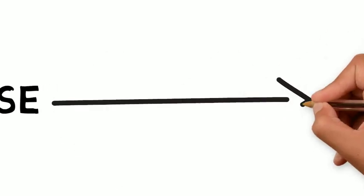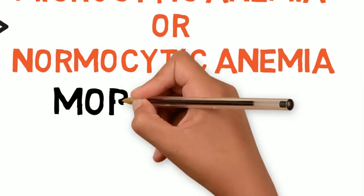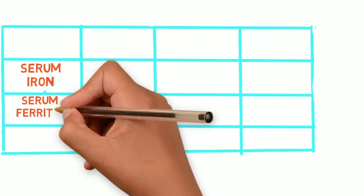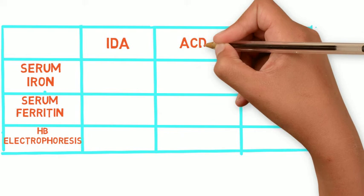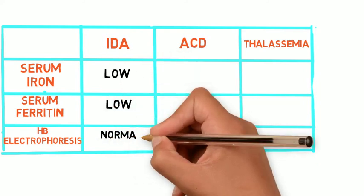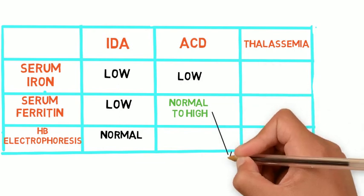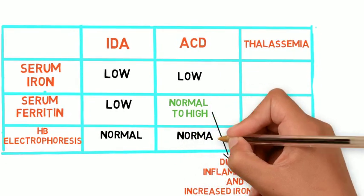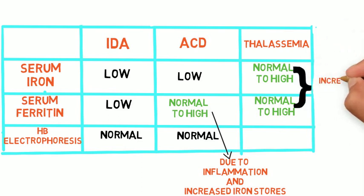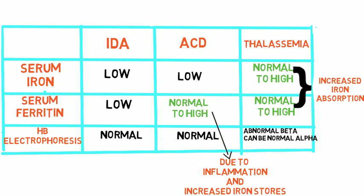Anemia of chronic disease more commonly causes normocytic anemia due to decreased erythropoiesis. To differentiate common microcytic anemias — iron deficiency anemia, anemia of chronic disease, and thalassemia: in iron deficiency anemia, both serum iron and ferritin are low, and electrophoresis is normal. In anemia of chronic disease, serum iron is low but ferritin is normal to high due to inflammation and increased iron stores, and electrophoresis is normal. In thalassemia, both iron and ferritin are normal to high due to increased iron absorption, and electrophoresis is abnormal in beta thalassemia but can be normal in alpha thalassemia.